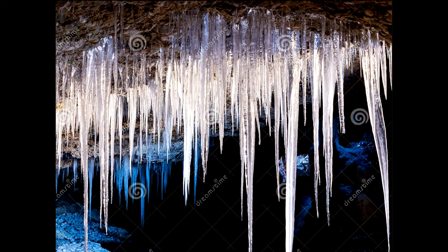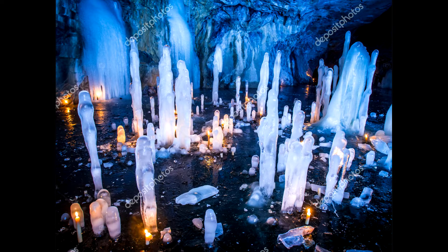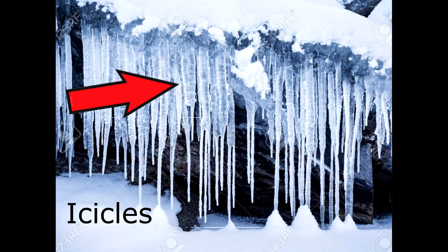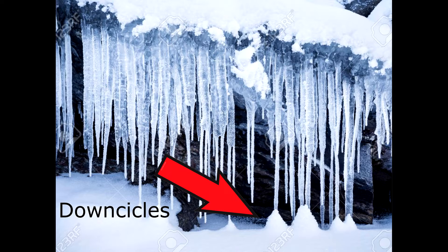Here's one you can find out in the wild. If left to themselves, ice can form both stalactites and stalagmites. The stalactites are known as icicles and the stalagmites are known as downcicles.